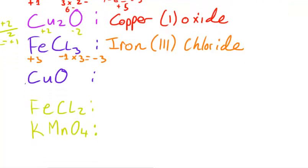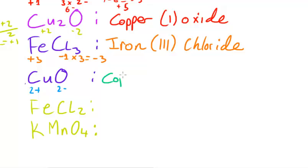The next one is CuO. Oxygen is going to be two minus, and copper balances that out with two plus, so this is copper(II) oxide.